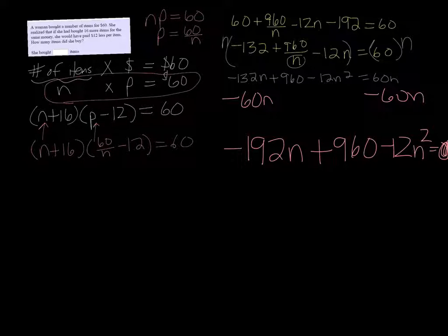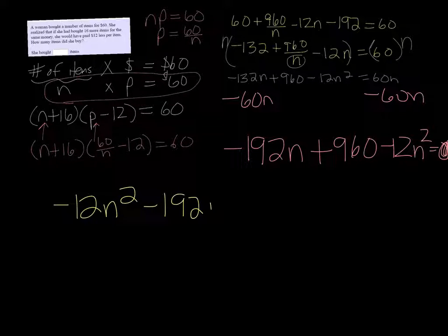Alright, at this point I want to put it in the right order, so I'm going to write it as negative 12N squared minus 192N plus 960, you know, descending order.